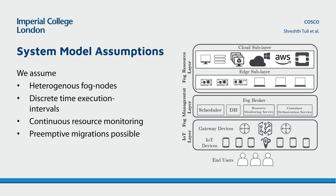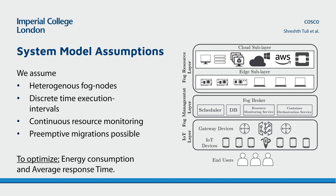All tasks are received from an IoT layer which includes sensors and actuators to collect data and send it across to the fog broker via the gateway device. The fog broker then decides where to allocate new tasks and where to migrate active tasks. We divide the timeline into equal duration intervals and create workload tasks at the beginning of each scheduling interval using a Poisson distribution. In this work we specifically aim to optimize energy consumption and response times using a convex combination of the two metrics.